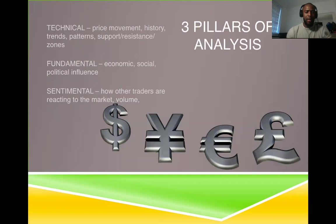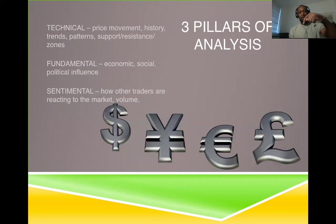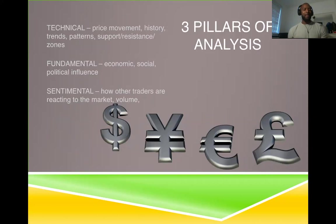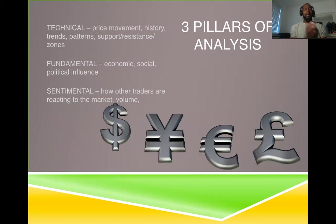The three pillars of analysis. First, technical analysis — we look at the price movement, what's happened in the history, what trends have happened, where's the market going, what patterns is it making, where's the support, where is it hitting and stopping and turning around? We identify these areas and zones because they're where people are buying and selling. History always tends to repeat itself — if interest rates go up, the market's going to do the same thing it did before. If there's a terrorist attack, Brexit, or any event that's happened before, they tend to happen again the exact same way.